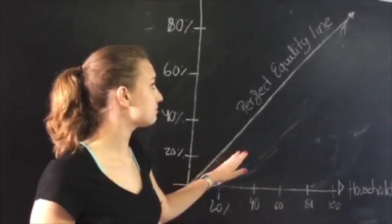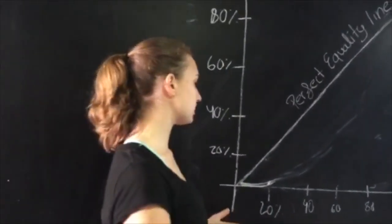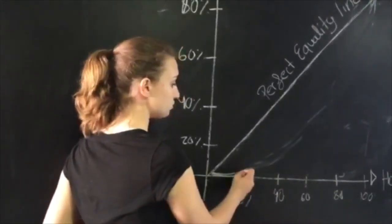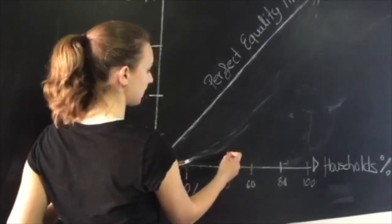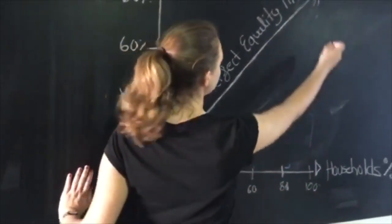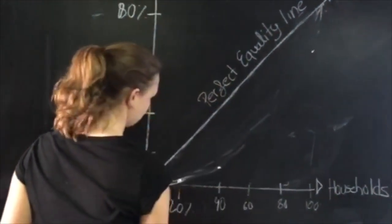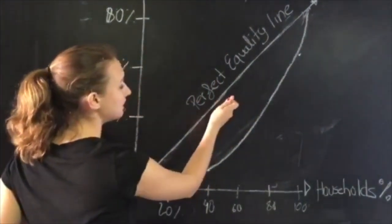This straight line represents the perfect equality line. But what we usually see in society is that the poorest 20% have about 5% of total income, continuing until the richest 20% have about 50% of total income. The closer the curve is to the perfect equality line, the better.